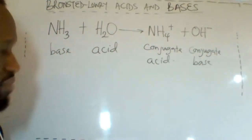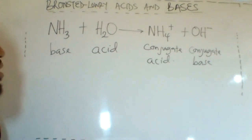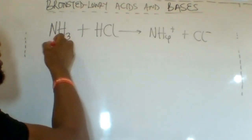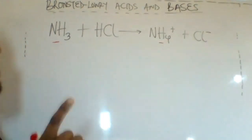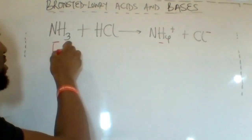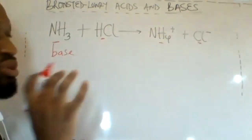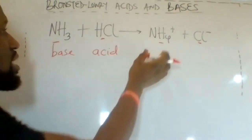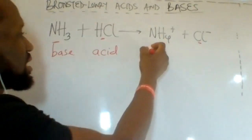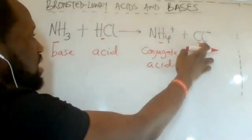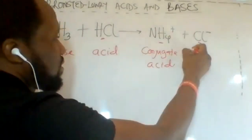So in the second example, NH₃ is known as our Brønsted-Lowry base, whereas NH₄⁺ is the conjugate acid. In our final example, NH₃ becoming NH₄⁺ accepted a proton, making it the Brønsted-Lowry base. HCl becomes Cl⁻ and must have donated a proton, making it the acid. NH₄⁺ is the conjugate acid formed from the base, and Cl⁻ is the conjugate base formed from the acid.